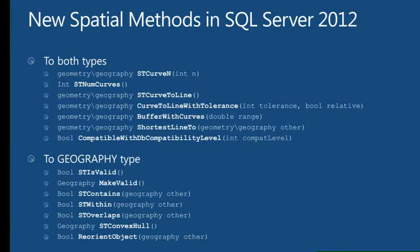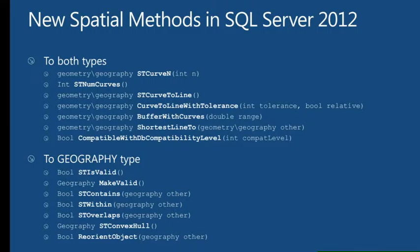The types of spatial operations we have: composition operations like union and intersection that take two objects and merge them into a new one; comparison operations like ST intersects and contains, used inside predicates to see whether something is true or false; construction like shortest line to and ST buffer; and numerical operations that give you distance or length of the object. Then there are properties like what is the coordinate of a specific point. In SQL Server 2012 we added curve-related objects, shortest line to, and some compatibility aspects new to both geometry and geography types. For the geography type, we added many operations that were missing in 2008, so we now have feature parity — make valid, within, overlaps, etc. in both types.